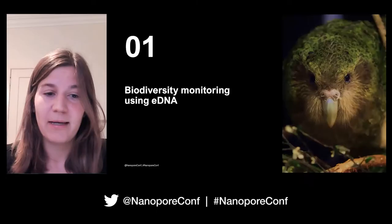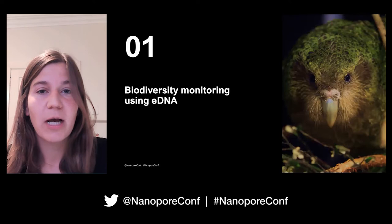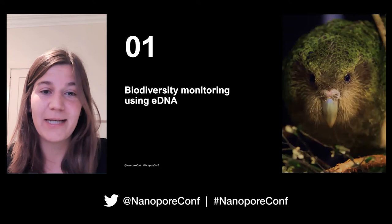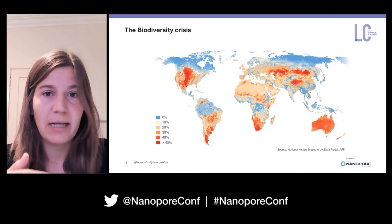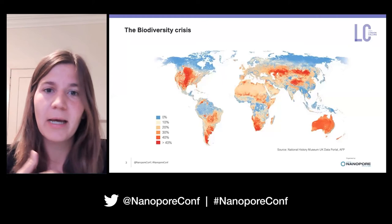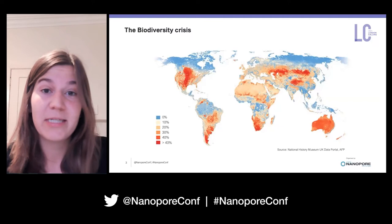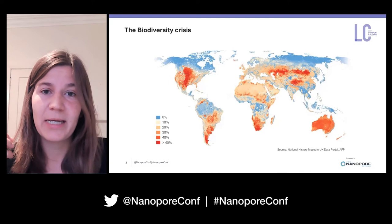Environmental DNA, or eDNA, is a very powerful approach to monitor biodiversity — not only the endearing kakapo species. As you probably know, across the world wild populations are decreasing at an unprecedented rate, resulting in huge environmental, social, economic, and cultural problems, including exacerbated food insecurity and pandemic risk. A key problem is that there are not enough quantitative measurements of biodiversity and its loss.